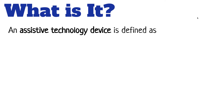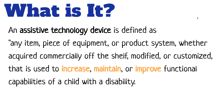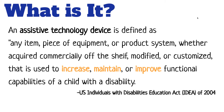This is kind of important to understand when talking about assistive technology devices — pieces of equipment, product systems — it doesn't matter where you get them from. Really important: it's used to increase, maintain, or improve functional capability of a child with a disability. This comes from the U.S. Individuals with Disabilities Act, IDEA, of 2004.